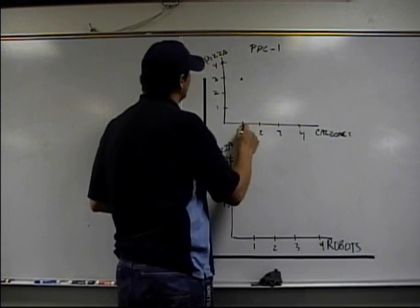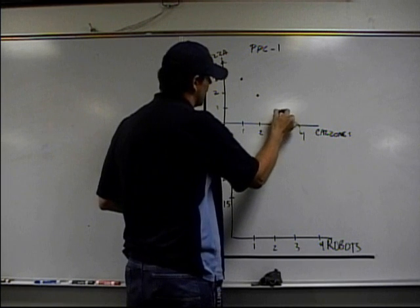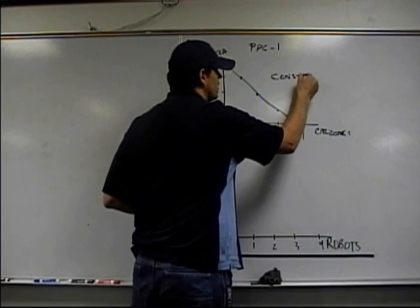When I want to produce each one of these calzones, I give up one of these pizzas. Another calzone, I give up another one, another calzone, I give another one, another one. The result, as you can see, is constant opportunity cost.